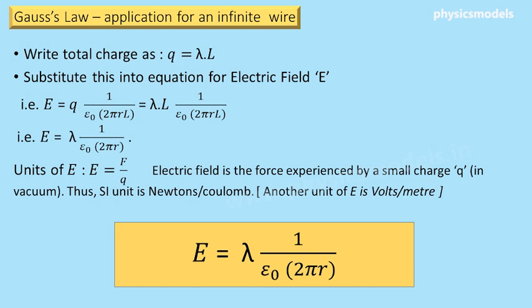We substitute the total charge Q equals λ times length, where L is the length of the Gaussian cylinder, not the wire. The wire is infinitely long, which is where the Gaussian cylinder becomes really useful. When we substitute this into the equation for electric field, the L and L cancel, and we get E equals λ times 1 over ε₀ times 2πR.